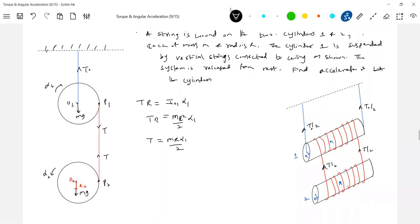Then let's write the equation of motion for this. T into r should be equal to IO2·α2, so T into r should be equal to mr²/2·α2, or T is equal to mr·α/2.